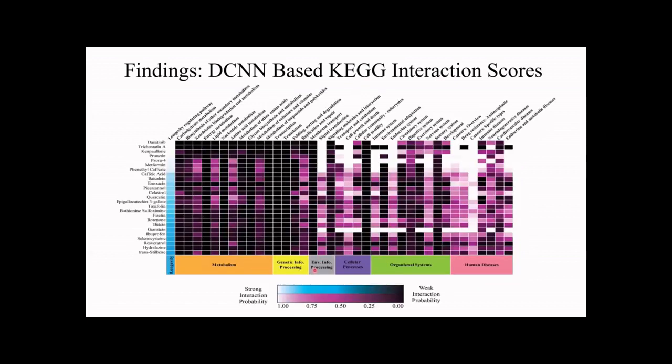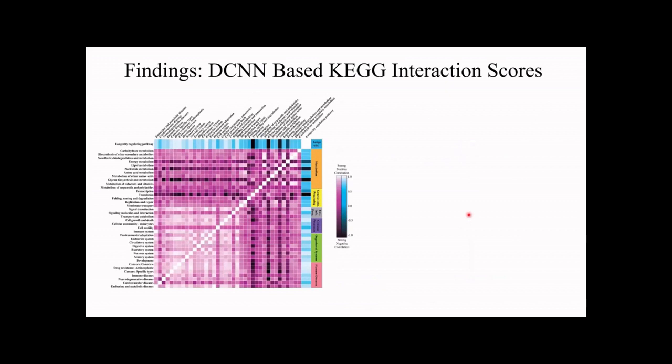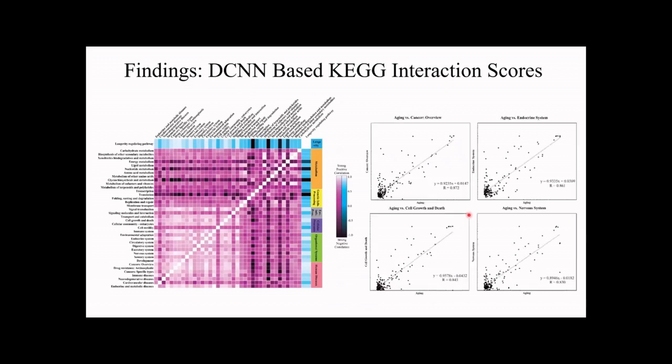When we further magnify these processes, we can see that these same compounds have varying interaction with individual pathways within these KEGG networks. Particularly in cellular processes and human diseases, we can see the most significant interactions. Cancer-specific pathways along with neurodegenerative and cell growth and death pathways are the most significantly correlated. Using these interaction patterns, we can visualize these relationships in a correlation matrix and show the highest correlated interaction networks with association to the longevity regulating or aging molecular network.